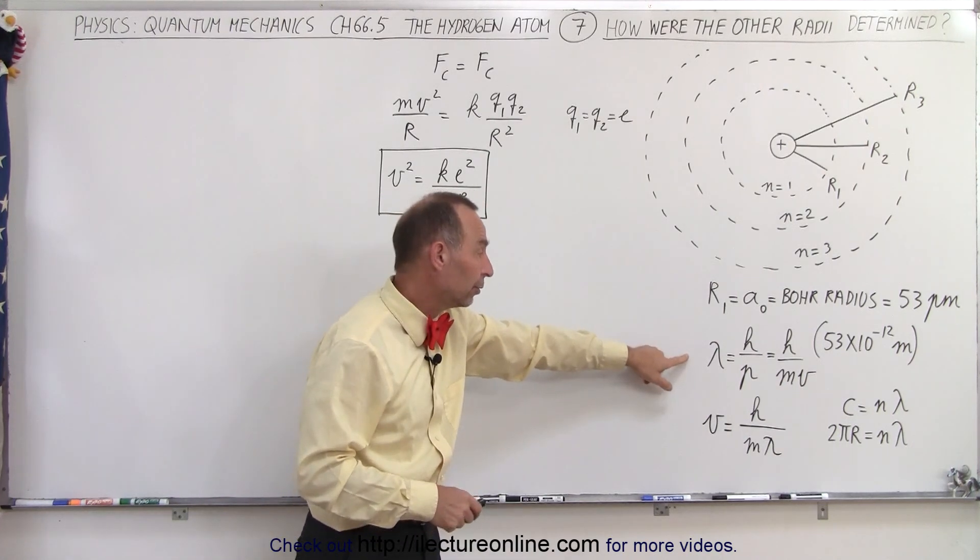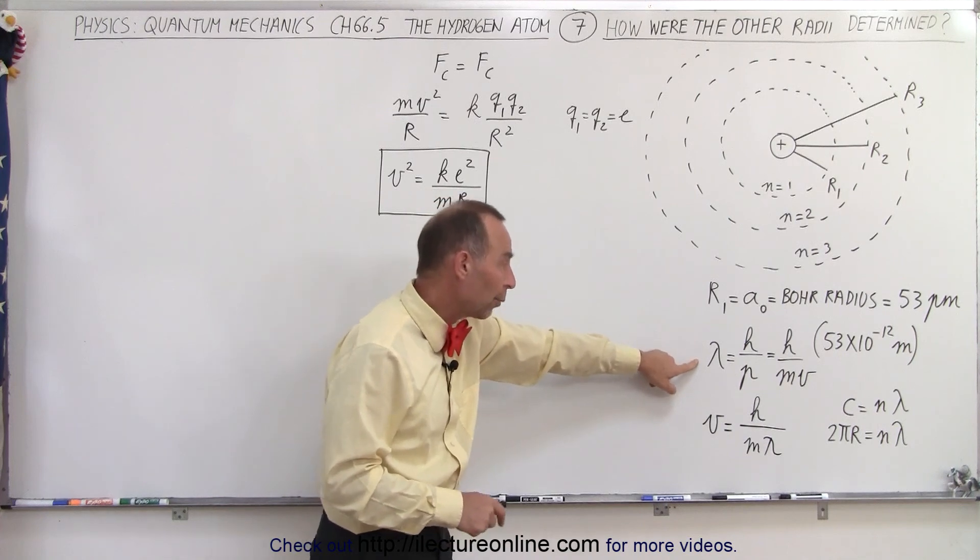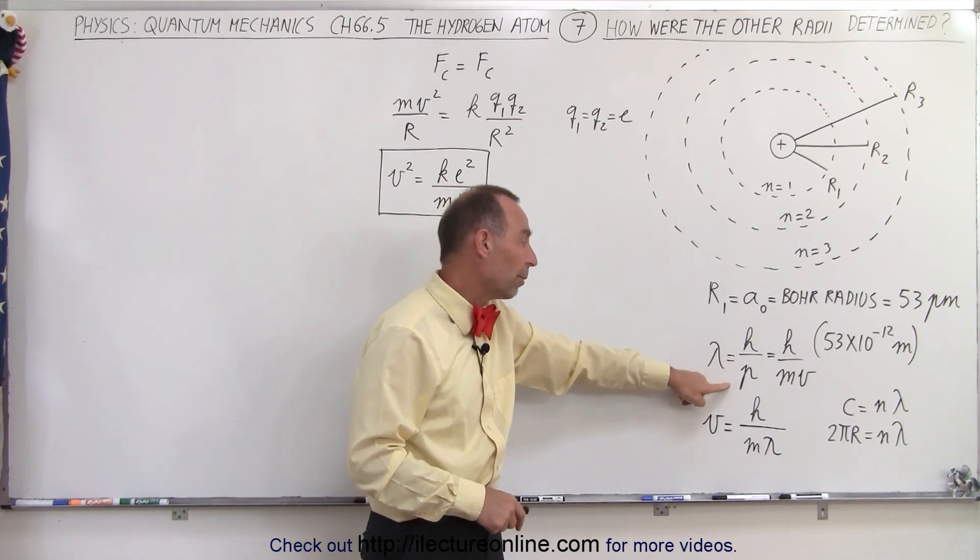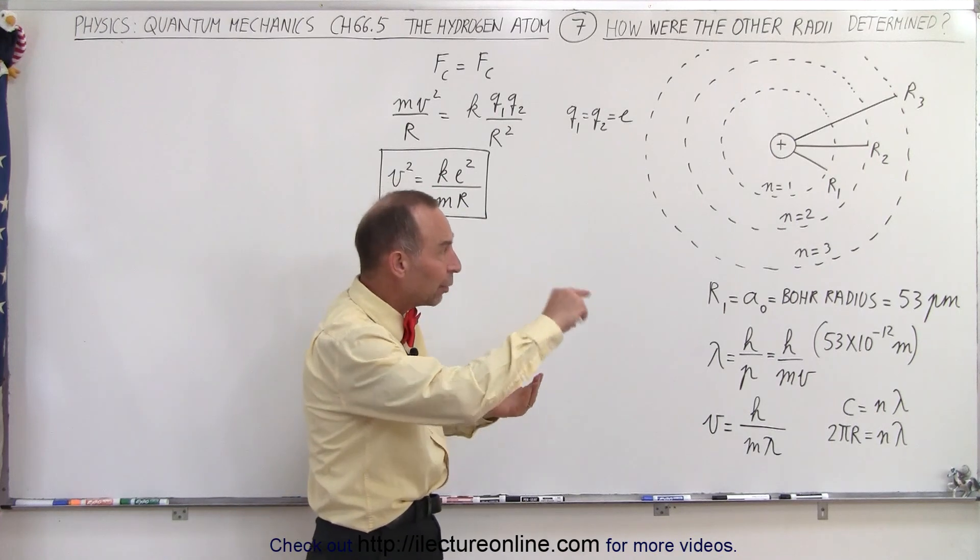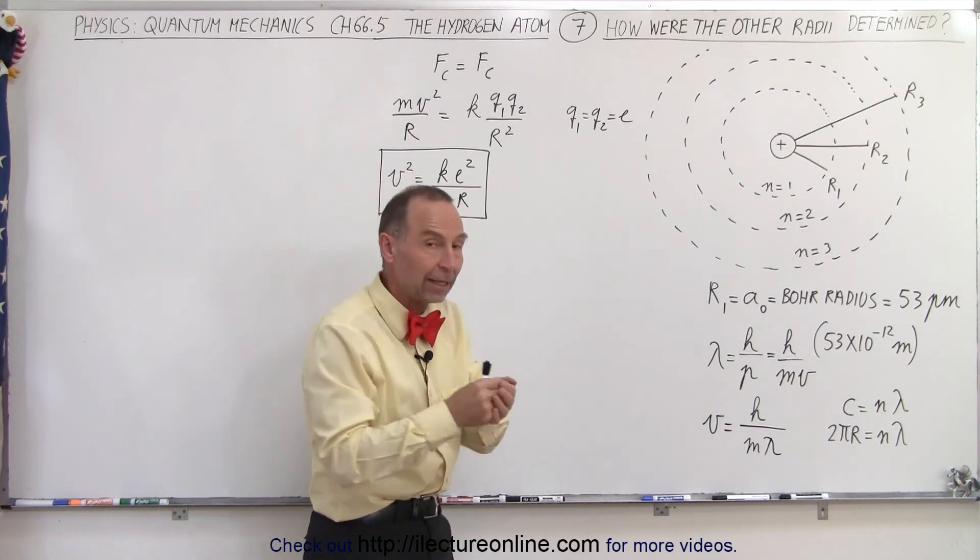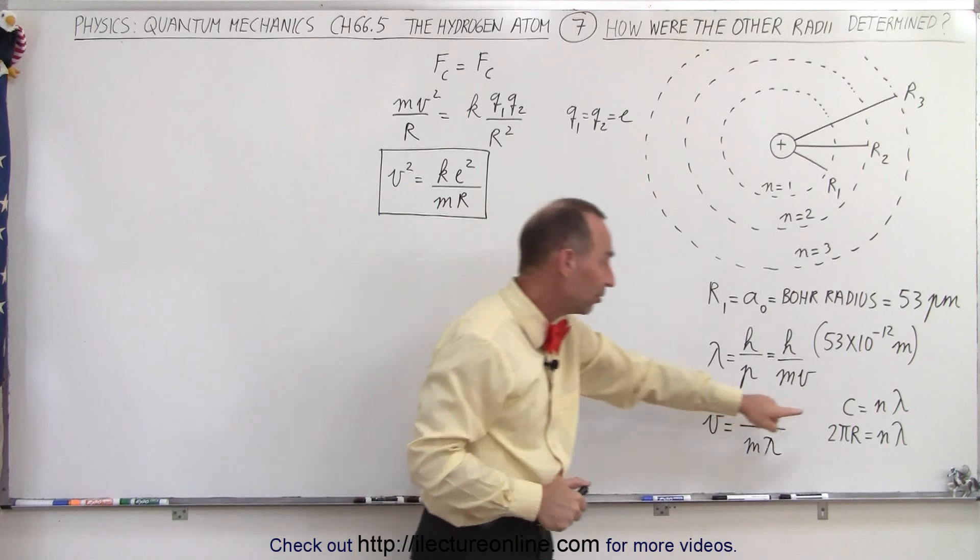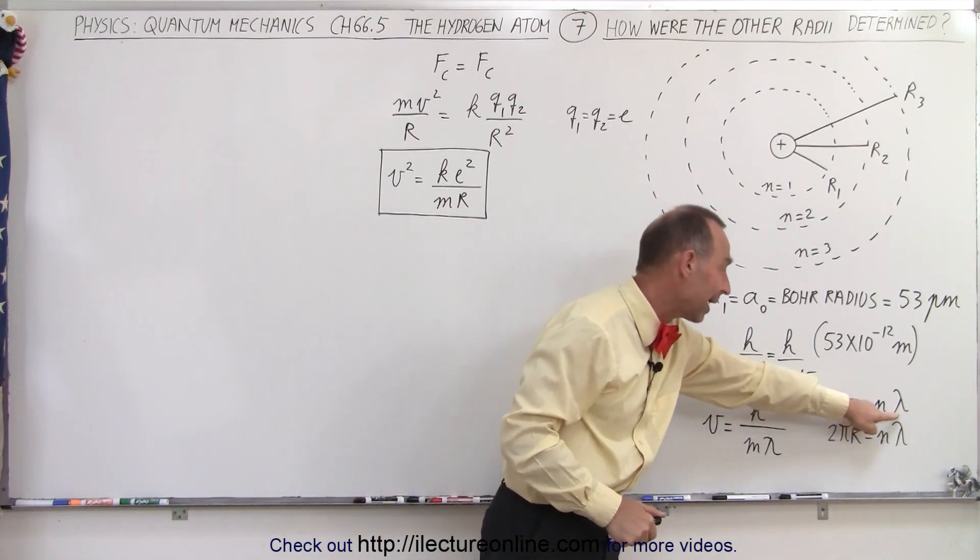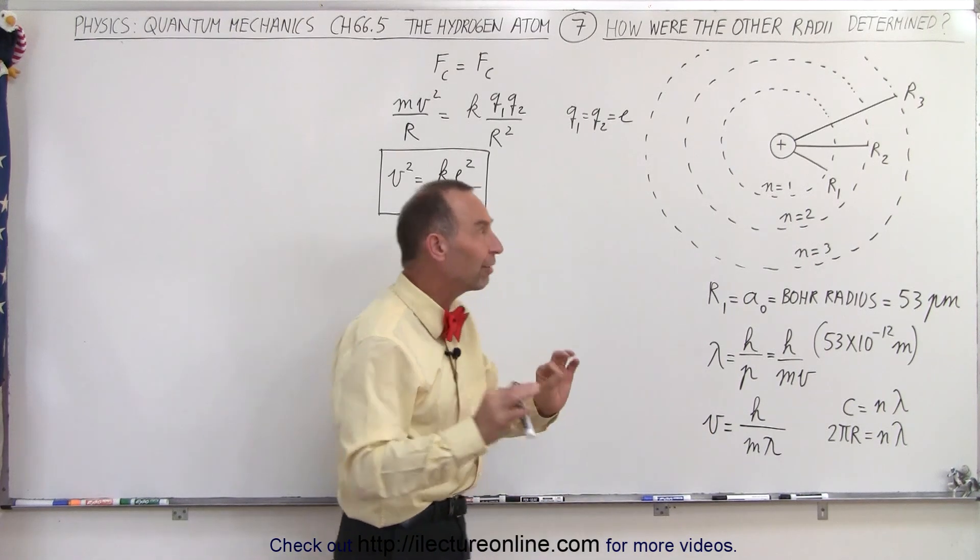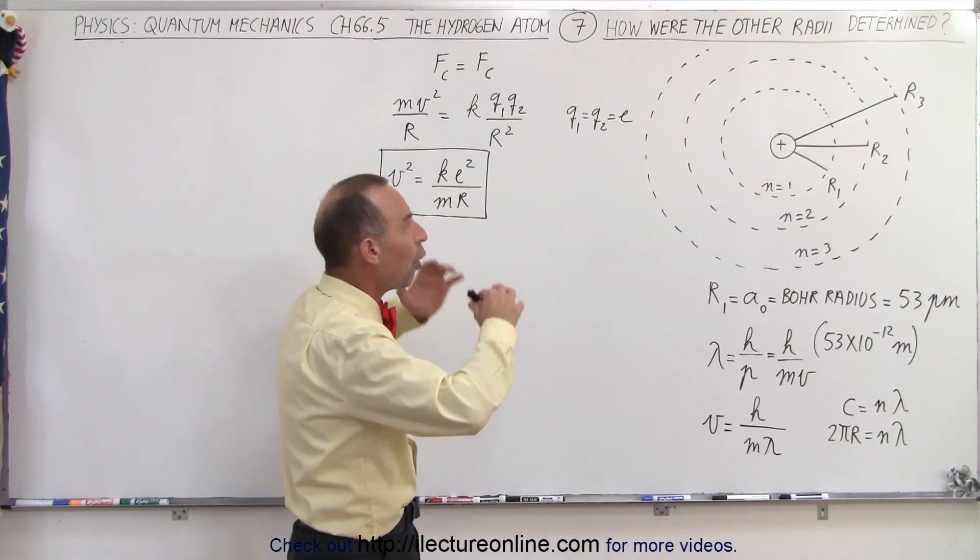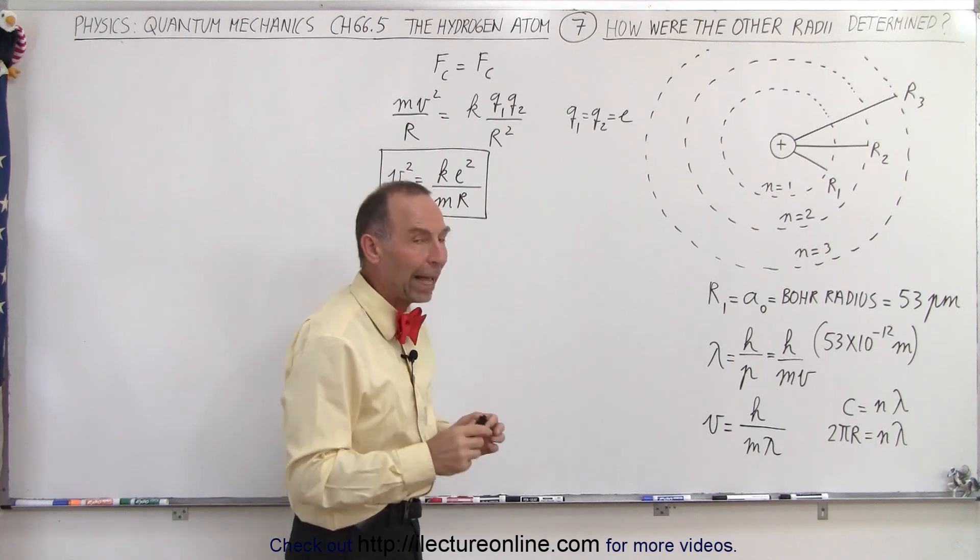And in tandem with that, using the de Broglie wavelength, being equal to H over the momentum, which is m times V, and realizing that the orbit of the electron has to be an integer number of wavelengths, so that the circumference is equal to n times lambda, or 2πr being equal to n times lambda, we're going to use that to figure out the radius of all the radii in the Bohr atom, in the hydrogen atom.